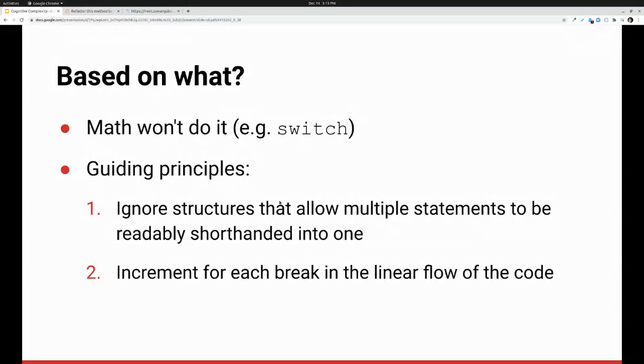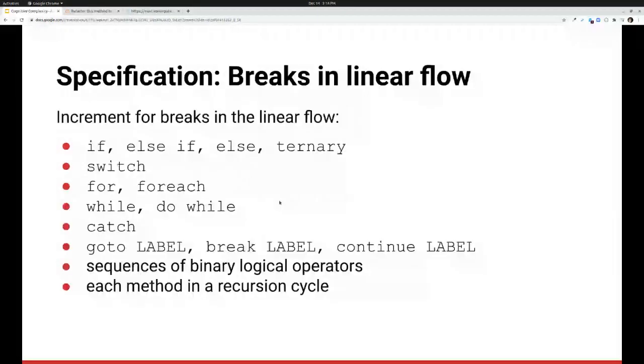So specifically for principle two, what we increment for is if, else if, else, ternary. We do get a slight discount here on ternary because a ternary is an if and an else together, and we only increment one for both of them. I had a discussion on Twitter recently with someone who thought that we ought to ignore it like a null coalescing operator, and I will argue all day with you that ternary is not readable shorthand. We also increment once for a switch and all its cases, no matter how many there are.